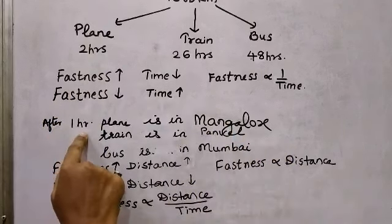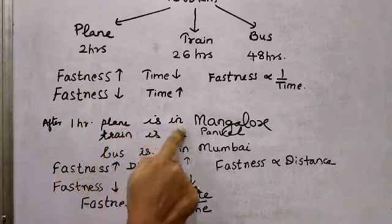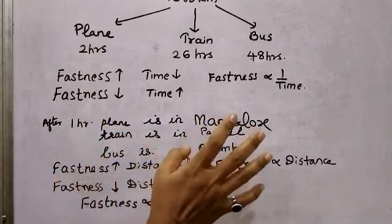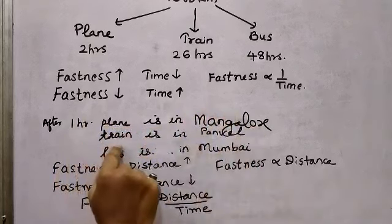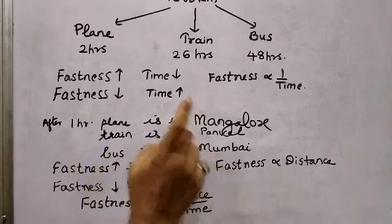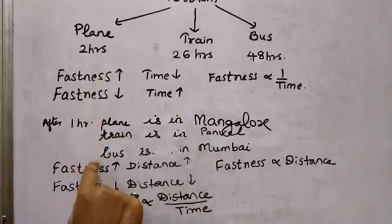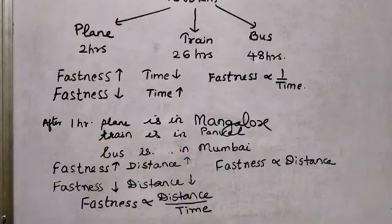After 1 hour, the plane is in Mangalore. After 1 hour, the train is in Panvel, whereas after 1 hour the bus is still in Mumbai.